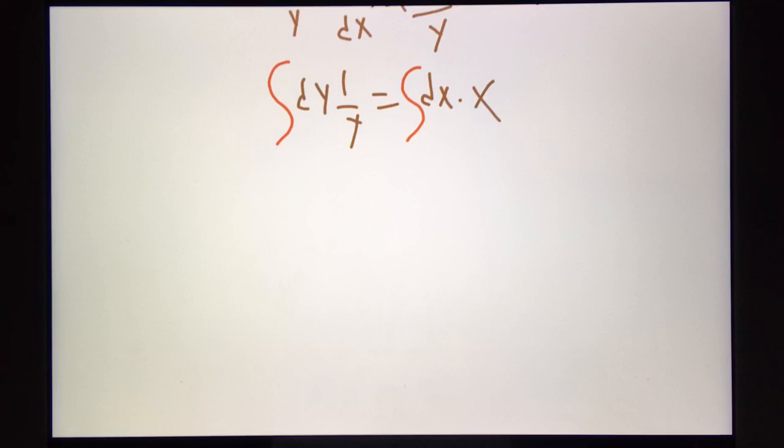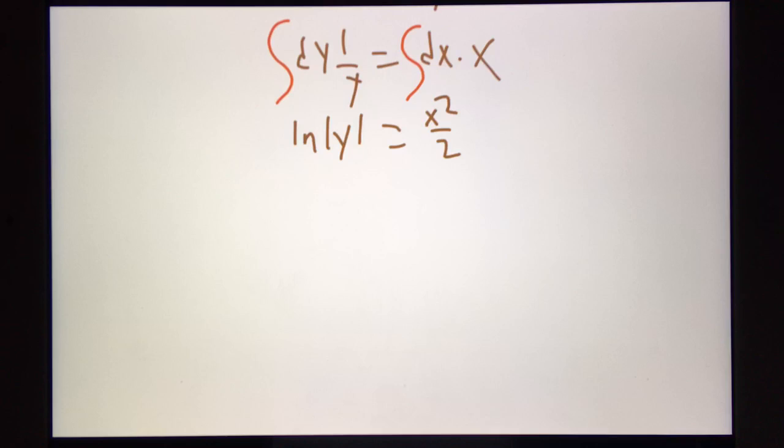And we get dy times 1 over y equals dx times x. And now we integrate. We use the fancy integral sign. And we find the antiderivative. The antiderivative of 1 over y is the natural log of the absolute value of y. We get x squared over 2, which is the antiderivative of x.